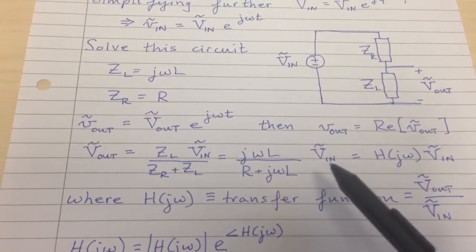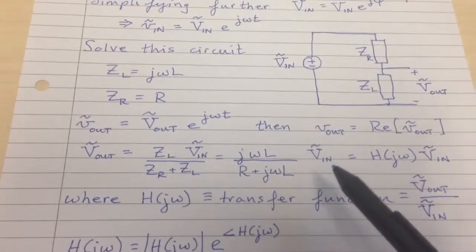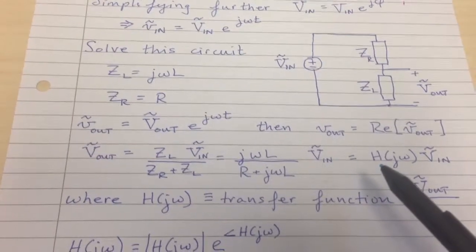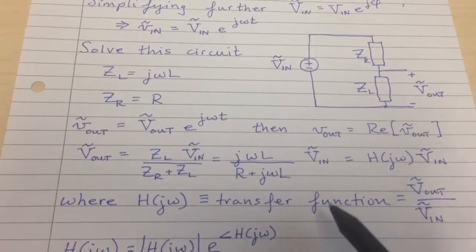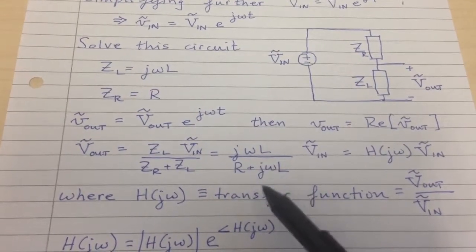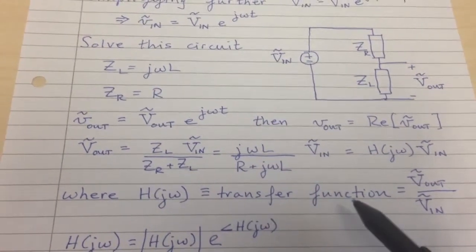Then, of course, you multiply by the source voltage, capital V_in tilde. And we'll do another substitution of variables, H(jω) times V_in tilde, where basically we've taken this voltage divider relation and put it into something called a transfer function.